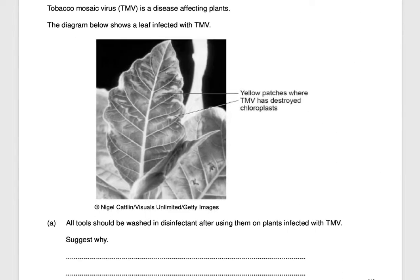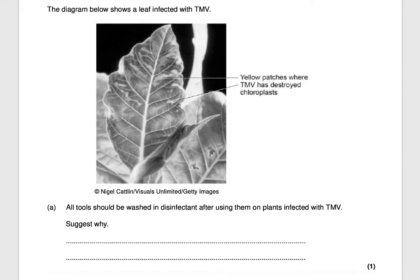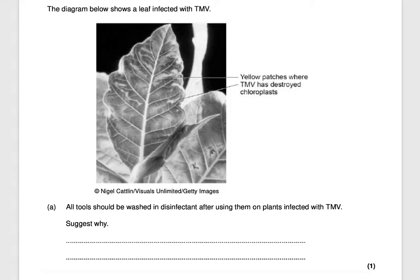Next question: tobacco mosaic virus (TMV) is a disease affecting plants. All tools should be washed in disinfectant after using them on plants infected with TMV. Suggest why. After using tools on an infected plant, the virus will be on them, so they should be washed to prevent the virus from spreading to other plants. That gets you one mark.